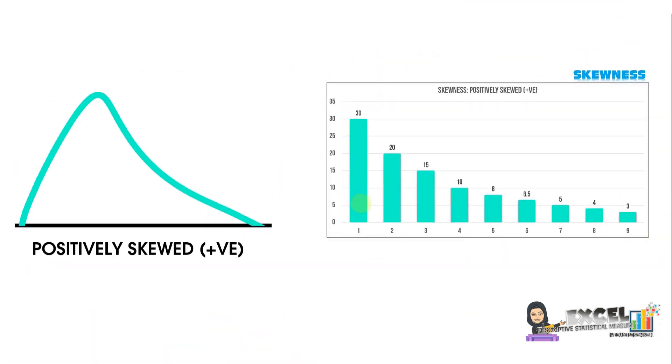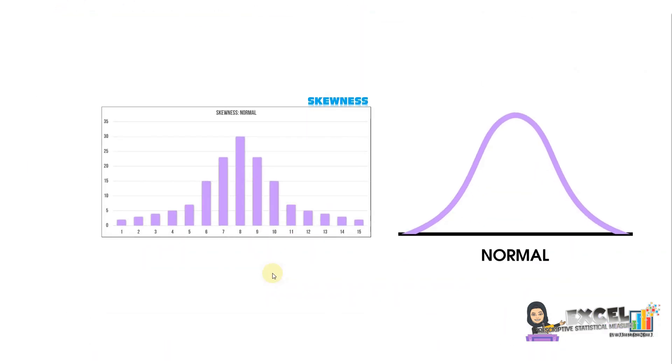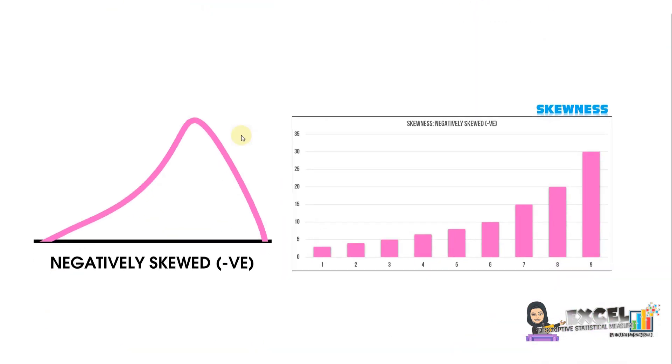For positively skewed, most of our data is located at the left side. Normal means that we have balance between left and right, where the highest is located at the central location. Negatively skewed shows that most of our data is located at the right side.